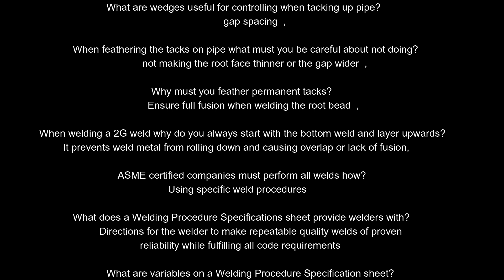When welding a 2G weld, why do you always start with the bottom weld and layer upwards? It prevents weld metal from rolling down and causing overlap or lack of fusion.